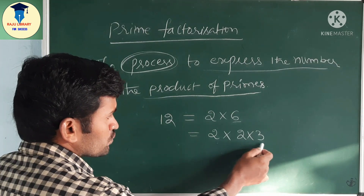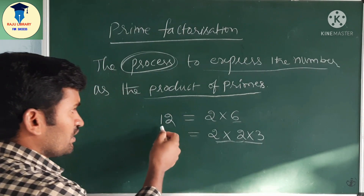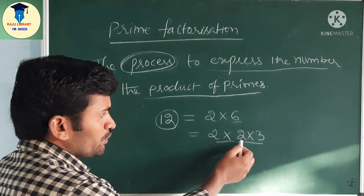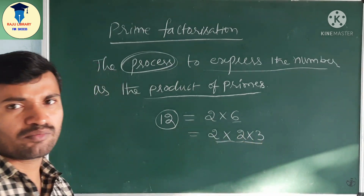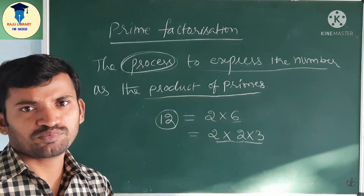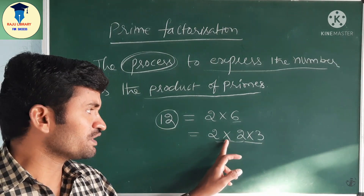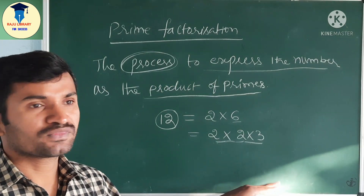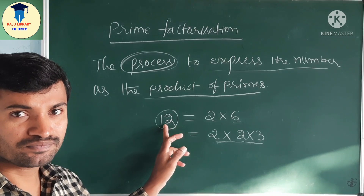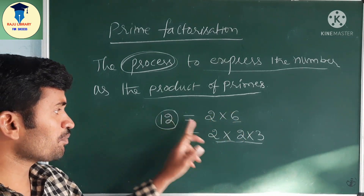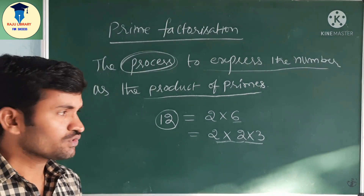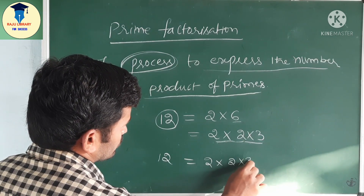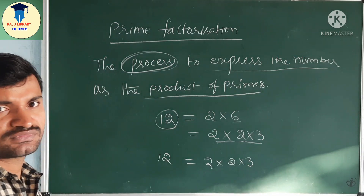Now multiply all those numbers together: 2 × 2 = 4, 4 × 3 = 12. So our answer came 12. If you observe carefully, 2 is a prime number and 3 is also a prime number. So what we are doing here is multiplication — this is the product of prime numbers. The process to express a number as the product of primes is called prime factorization. So we can write 12 as 2 × 2 × 3.